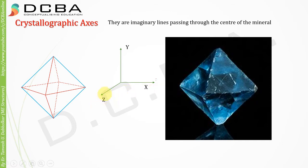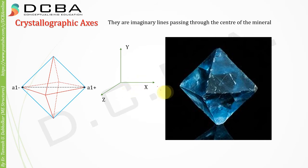This is a random mineral I have chosen because it almost resembles what we are learning. So let us say that these are the edges of that mineral. From the center, I pass a line from one edge to the other edge, and it will obviously go through the center of the mineral. I will name this a1 minus and a1 plus.